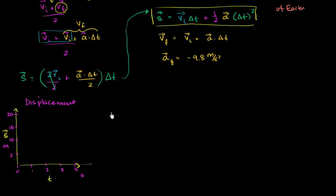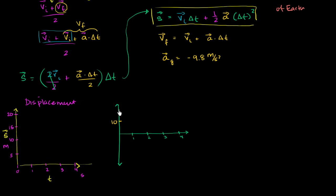I also want to do a velocity graph. Since velocity will be going up and down, we need both positive and negative values on the velocity axis. Time is only positive, going from 0 to 4 seconds. Velocity markers are at 10, 20, negative 10, and negative 20 meters per second.